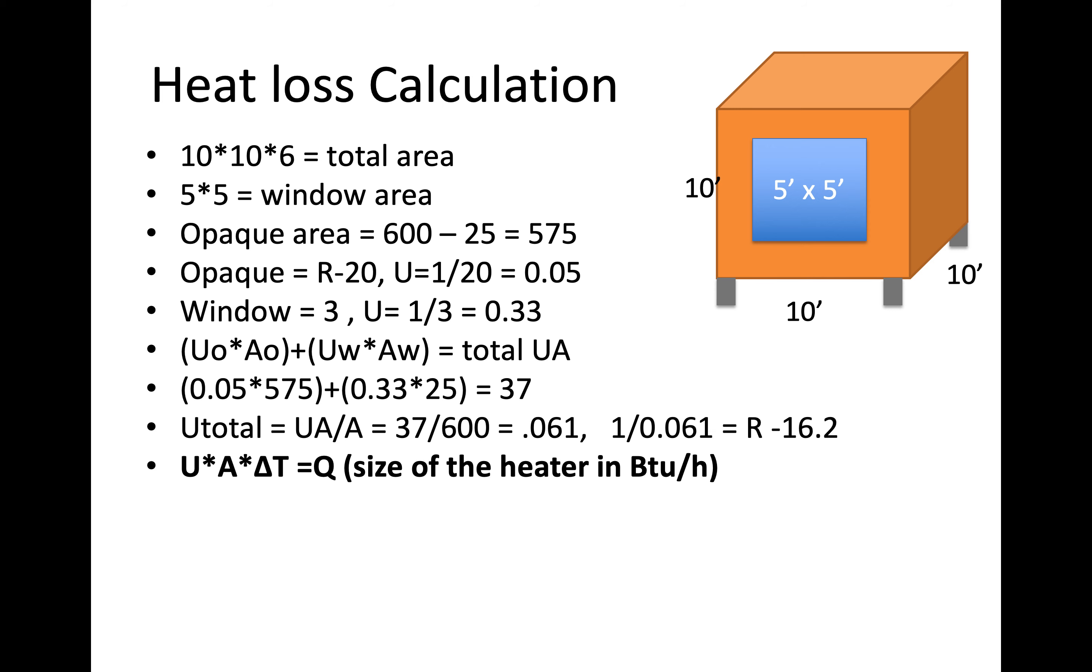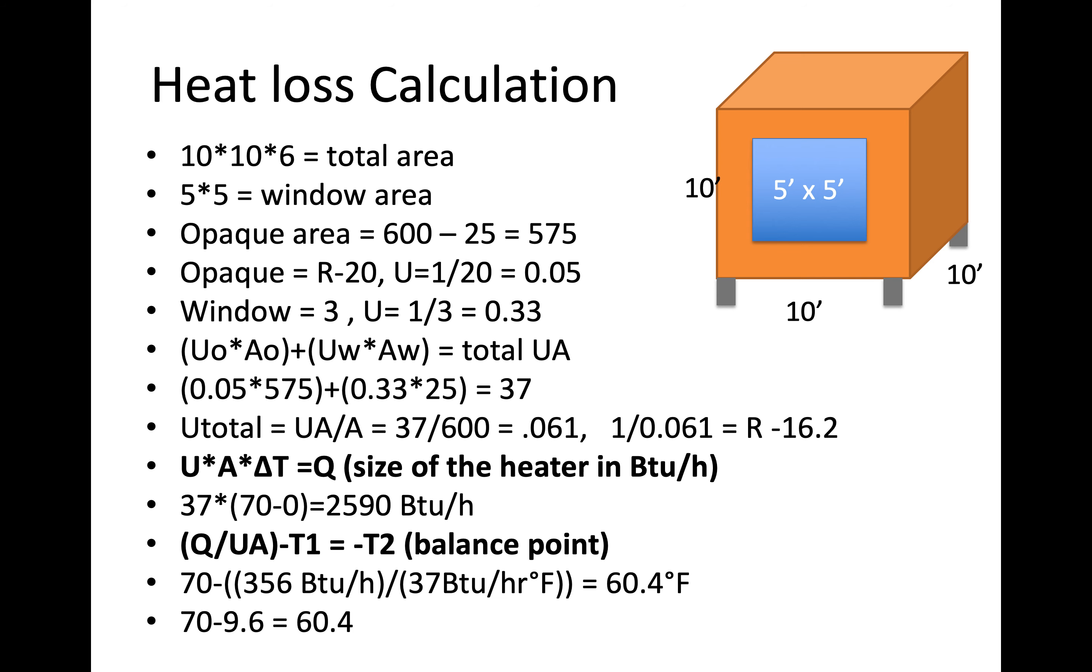But we want to calculate the size of the heater in BTUs per hour. So we can use this equation that we're going to visit a lot, which is u times a times delta t is going to be equal to q or the power of the heater. So in this case, we already have UA because we calculated it up in the original calculation. So we have 37 times delta t. In this case, we know that he's maintaining it at 70 degrees and that our design temperature is 0 degrees, which is convenient because then our delta t is 70. So if we multiply that through, we get 2,590 BTUs per hour. So that's the size of the heater that we would require just to keep the space warm.